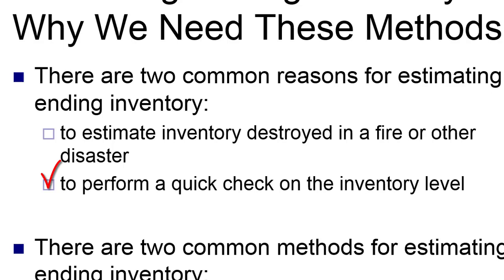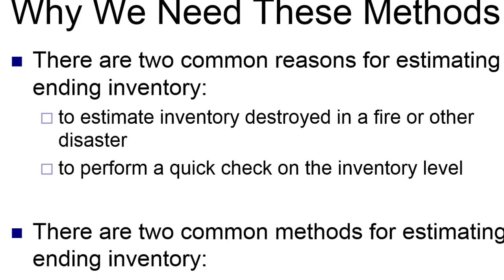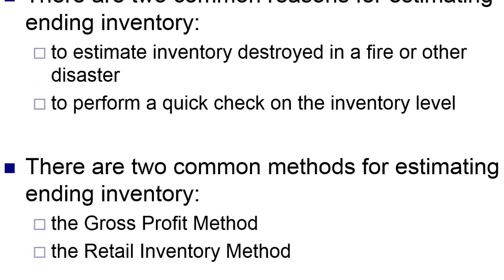If I am an auditor or a manager looking at the numbers and what I have in my books is very different from this method, let's do a count. Just like there are two reasons to use the methods, there are two methods we can use. The most common is the gross profit method — that's the super shortcut method. The more advanced and involved is the retail inventory method, which is much more accurate but also much more challenging.